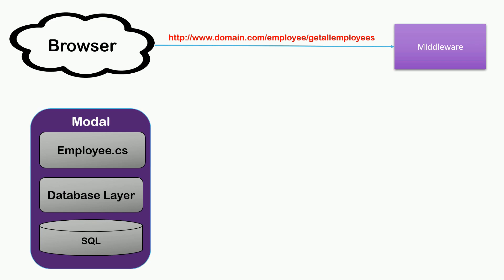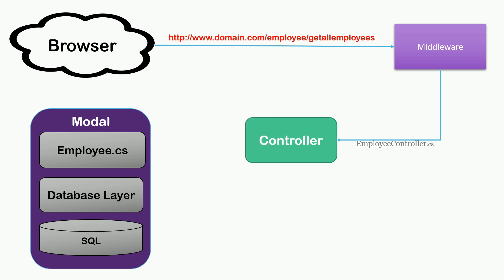As per MVC architecture, the controller will be responsible for handling user interaction. Whenever a request comes to our application, it will be handled by our controller. Our middleware will send the request to the EmployeeController class. How does it identify which controller to send to? It's from the URL — domain.com/employee. This controller is already trained by the developer to send employee details. It will ask the model: give me the list of employees.